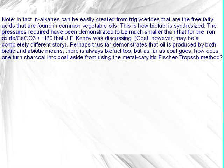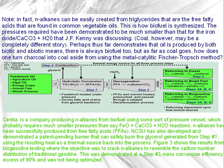Coal, however, may be a completely different story. This perhaps demonstrates that oil is produced by both biotic and abiotic means — there is always biofuel too. But as far as coal goes, how does one turn charcoal into coal aside from using the metal-catalytic Fischer-Tropsch method? Censure is a company producing N-alkanes from biofuel using a pressure vessel, which probably requires much smaller pressures than iron oxide and H₂O reactions. N-alkanes have been successfully produced from free fatty acids (FFAs). NCSU has also developed a patent-pending burner that can safely burn the glycerol generated from step one, using the resulting heat as a thermal source back into the process. Figure 3 shows biogasoline testing where the objective was to crack N-alkanes to resemble the carbon number distribution of traditional gasoline, demonstrated at over 90% mass conversion efficiency.